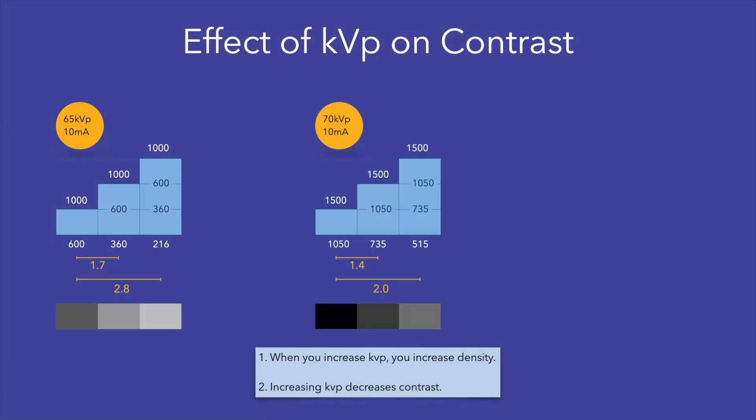Next, let's increase the KVP. When you increase the KVP, you increase the number of photons as well as the energy of the photons. Thus, you have more than 1000 photons and less than 40% of the photons are absorbed. This simulation demonstrates that by increasing the KVP, you will increase the density of your image and decrease the contrast of your image.